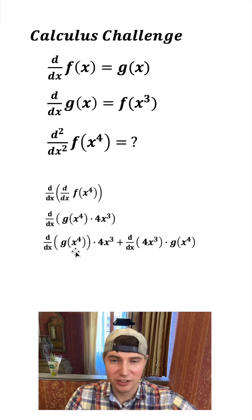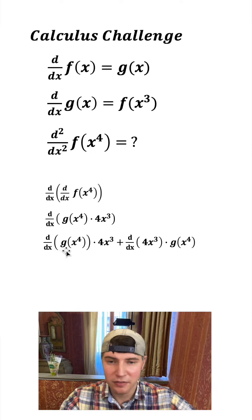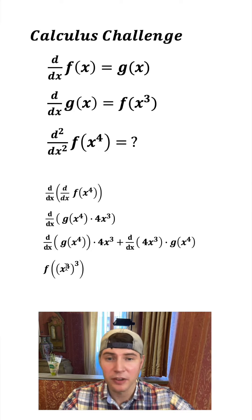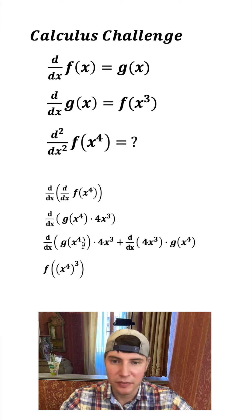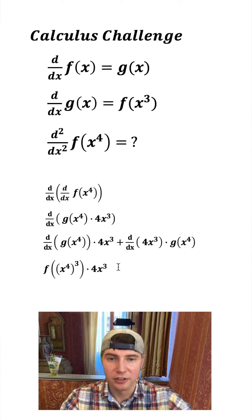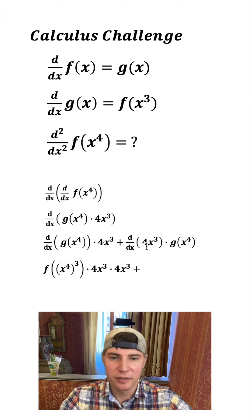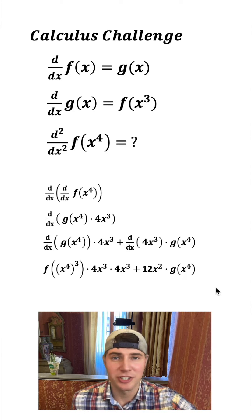So this derivative of g of x to the four. So it says the derivative of g of x is f of x cubed. So the derivative of g of x to the fourth would be f of x to the fourth cubed. So then because of the chain rule, we have to multiply it by the derivative of this inner function x to the fourth, which gives us four x cubed. And then we're gonna multiply it by this other four x cubed, plus the derivative of this is just 12 x squared. And then this g of x to the four is just left alone.